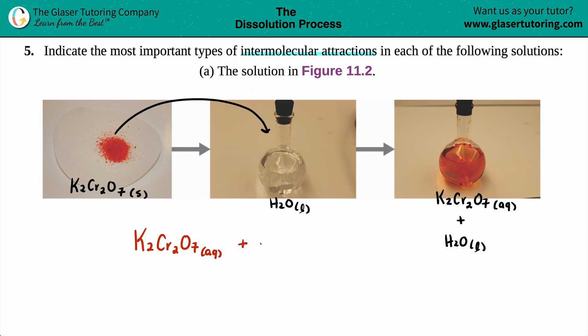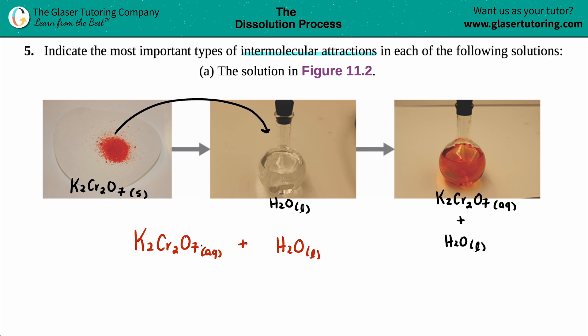We're dealing with K₂Cr₂O₇ in aqueous form and H₂O as a liquid. The easiest way to do this is to list out all of the intermolecular forces that these compounds have. Keep in mind that no matter what type of compound you have — whether ionic or covalent — they're always going to have dispersion forces. However, this is an ionic compound, meaning you have a metal — the potassium — and a polyatomic ion.